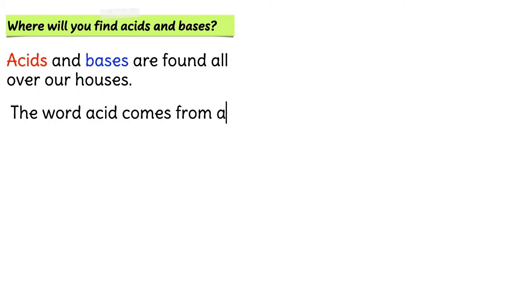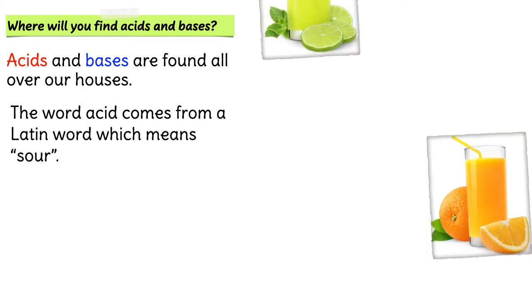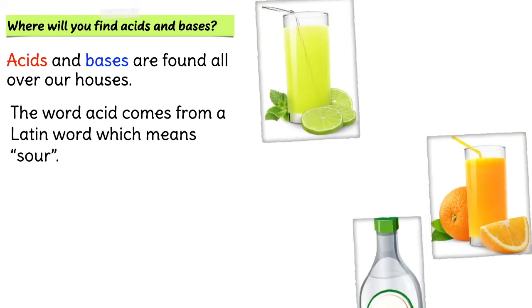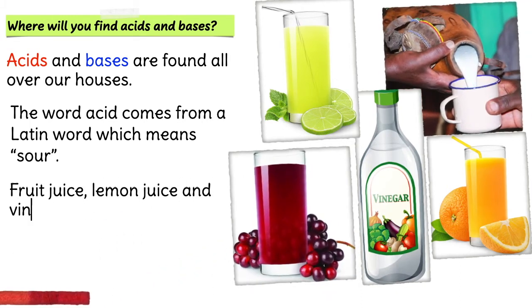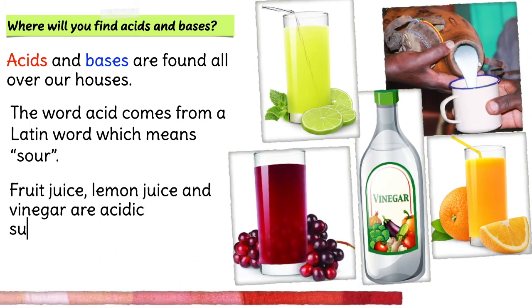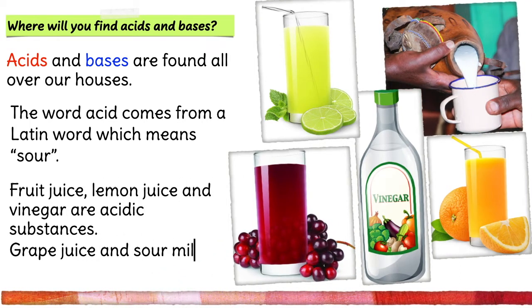Acids and bases are found all over our houses. The word acid comes from a Latin word which means sour. Fruit juice, lemon juice, and vinegar are acidic substances. Grape juice and sour milk are also acidic.